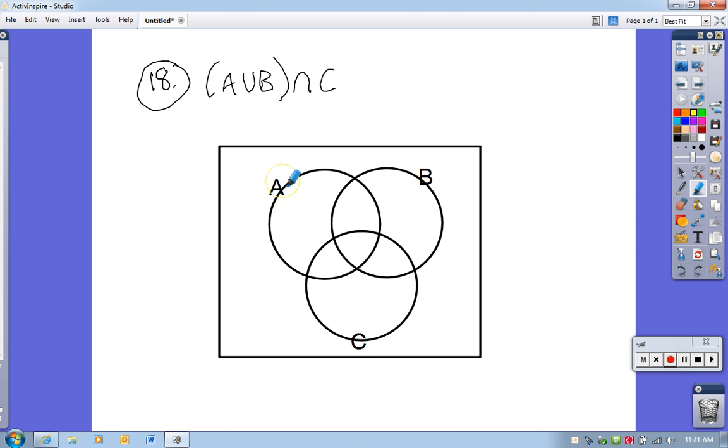A union B. So that's everything that's in A, combined with everything that's in B. So right now, anything that is shaded, here's all B. Anything that is shaded is part of this. So all of this shading that's this color is that part right there.